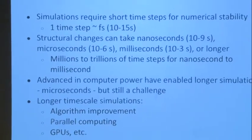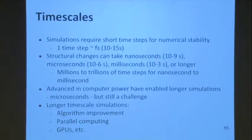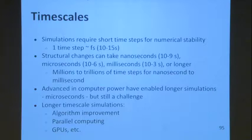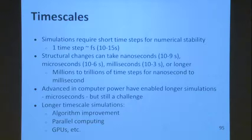First, limitations: time scale. You need a short time step for stability of the system. If you're interested in vibrations of molecules, the time step needs to be at the same order of magnitude — if you have a vibration at one femtosecond and you use 10 femtoseconds, you lose that information. You need a relatively small time step, but structural changes can take up to 10⁻⁶ seconds or microseconds, so you cannot get the full picture.